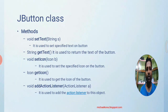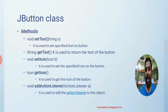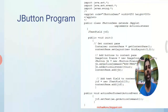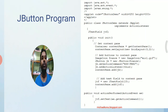In JButton, the last key method is addActionListener, used to register the JButton object with the listener. Only after calling addActionListener can we perform an operation when the event occurs. Let us look at an example to understand all of this.